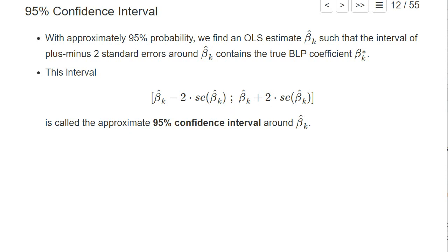So this 95% confidence interval mathematically is: we take our estimate which we have computed from one sample, we subtract two times the standard error of it (that's the left border), and on the right border we take our estimate and add two times the standard error. We know that in these intervals, in 95% of the cases, we have our true best linear predictor coefficient.